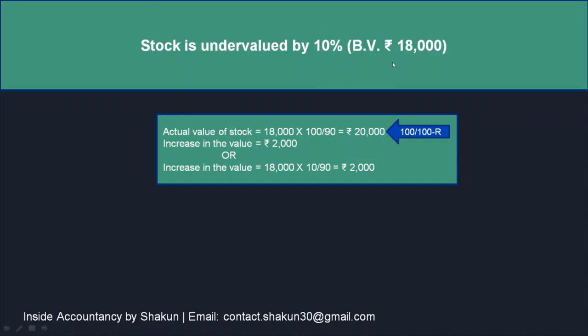Since the book value was given as 18,000 and the increased value is 20,000, that means the increase in the value of stock is 2,000. There is another way of calculating it, which students find a little easier to understand.